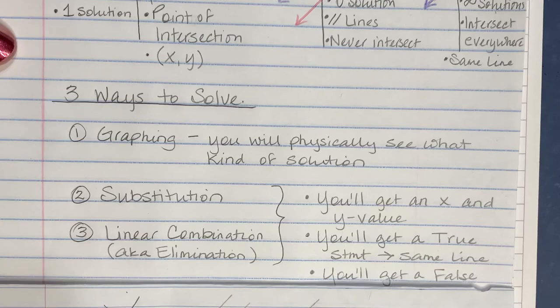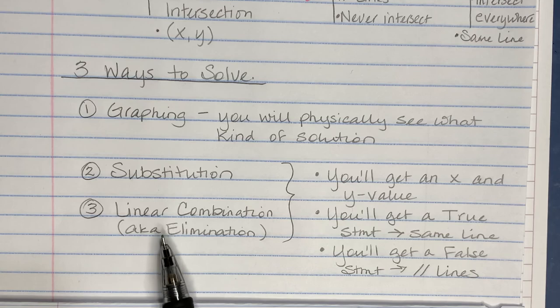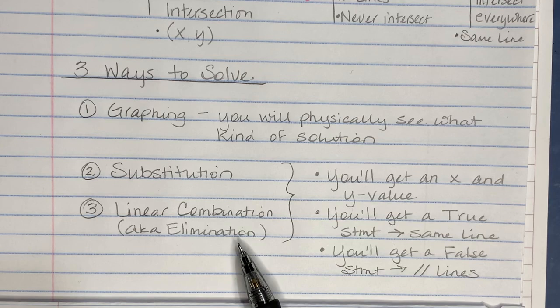You can also solve by substitution or by elimination, which is most commonly referred to as linear combination. Substitution is when you're plugging one equation into the other, and linear combination is when you're combining the two equations in order to eliminate a variable — another way to solve algebraically.